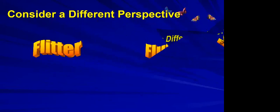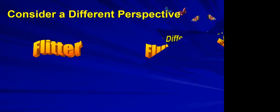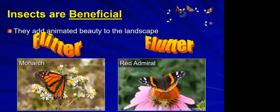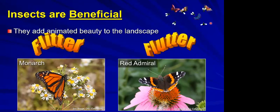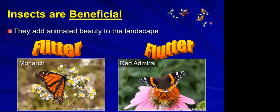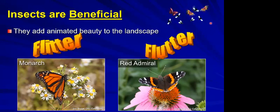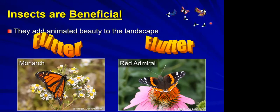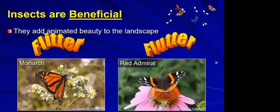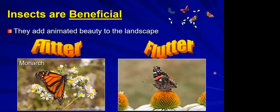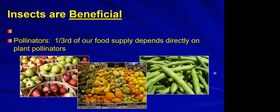Let's consider some different perspectives. When I use the words flitter and flutter, what comes to mind? Relative to insects, we think about things like butterflies and moths. The point being is insects are beneficial because they do add animated beauty to the landscape. What draws our attention very often to those flowers when we see something like a red admiral flittering around and even the underside of this butterfly is beautiful.